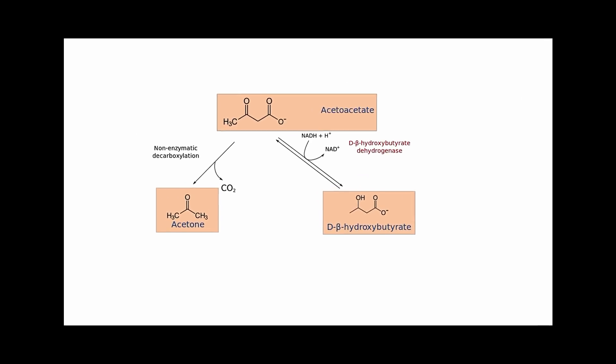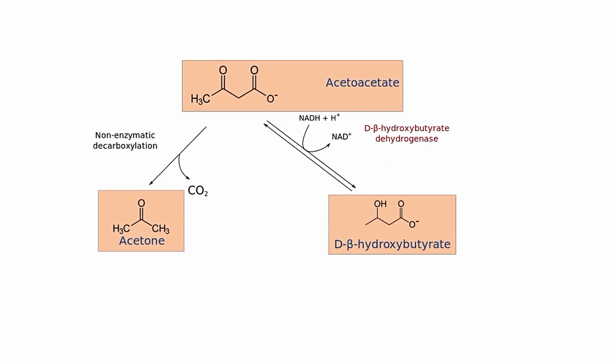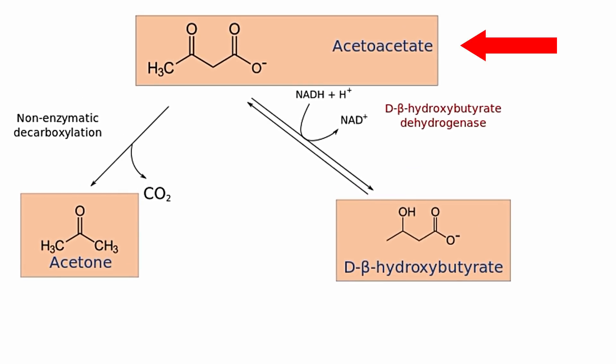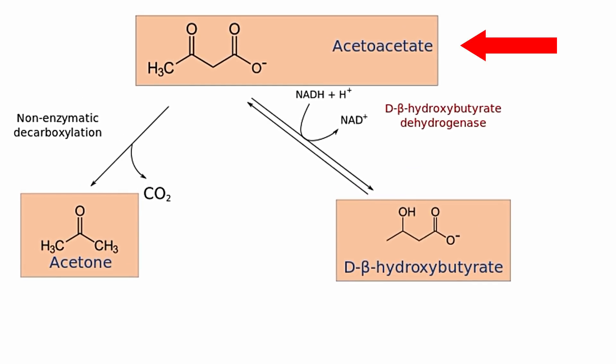So there are three of them. Acetoacetate is the first ketone that's made. Then through beta-oxidation, it becomes beta-hydroxybutyrate. And some of that acetoacetate is broken down into acetone and CO2.